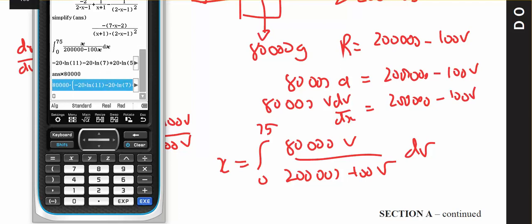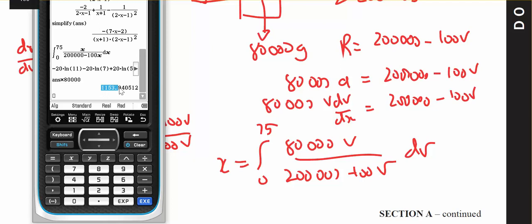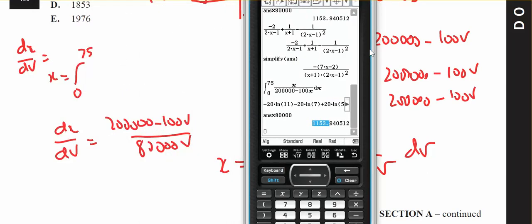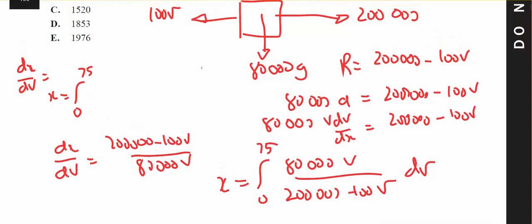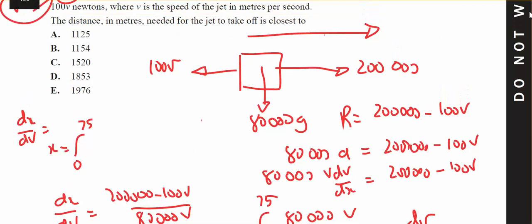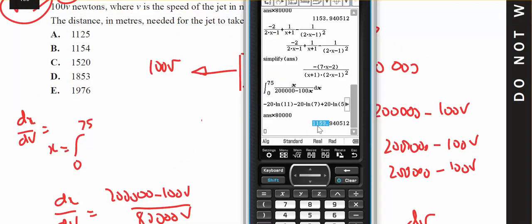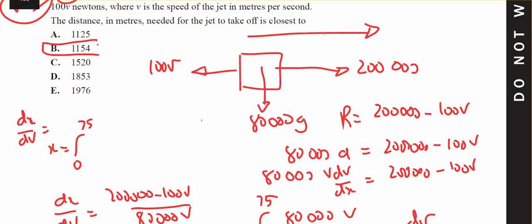I get 1,153.94, which I'll take as being B.